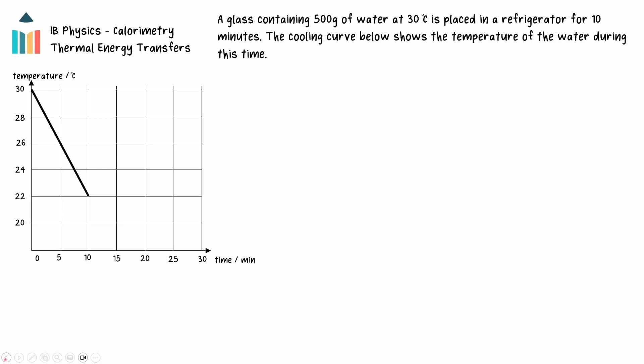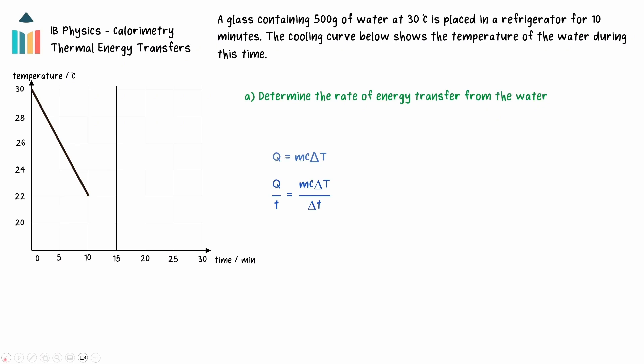Let's consider an example problem. A glass containing 500 grams of water at 30 degrees Celsius is placed in a refrigerator for 10 minutes. The cooling curve below shows the temperature of the water during this time. Determine the rate of energy transfer from the water. The graph features a sloping section in which the temperature of the water is decreasing, so the relationship q equals mc delta T applies here. Dividing both sides of this relationship by time gives us q over t equals mc delta T divided by t. q over t is the rate of energy transfer, or the power from the water, and delta T over t is the gradient of the line. The gradient can be found by taking the ratio of the change in temperature to the time for any two points on the graph.